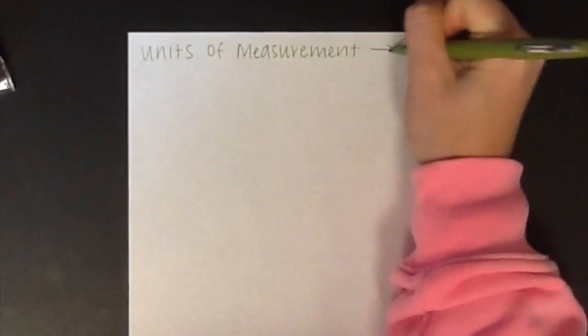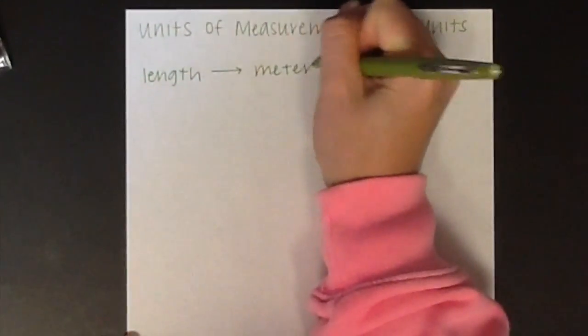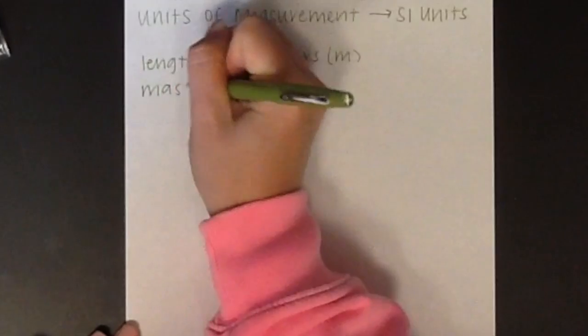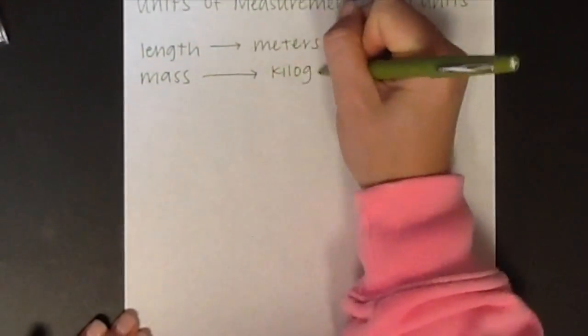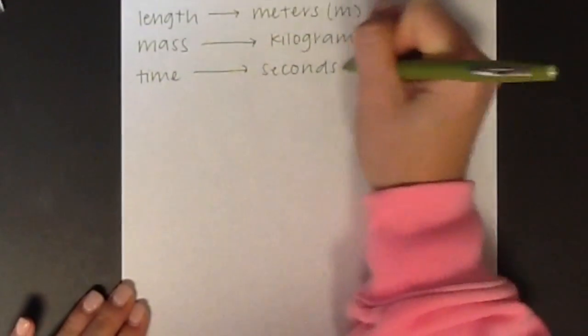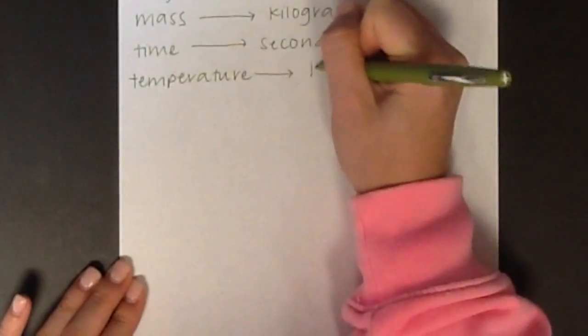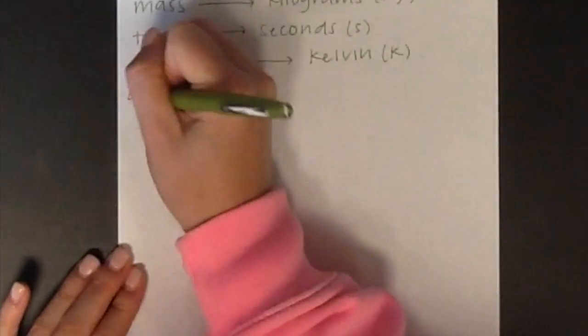In science, we use the metric system, known as the International System of Units. Five base units that we will be looking at in this lab include length, which is measured in meters; mass, which is measured in kilograms; time, which is measured in seconds; temperature, which is measured in Kelvin; and amount of substance, which is measured in moles.